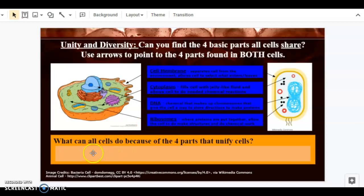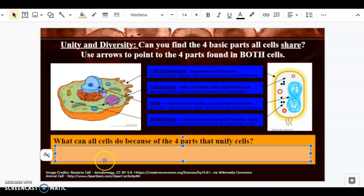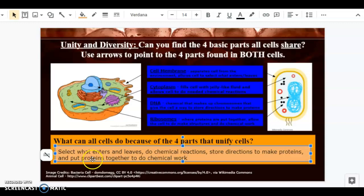Because all cells have all four of those parts, all cells are able to select what enters and leaves because they all have a cell membrane. They are able to do chemical reactions because they all have a cytoplasm. They are able to store directions to make proteins because they all have DNA. And they are able to put proteins together to do chemical work because they all have ribosomes.